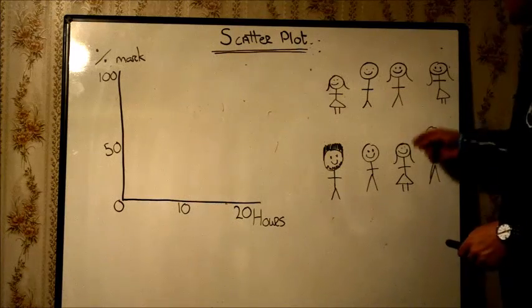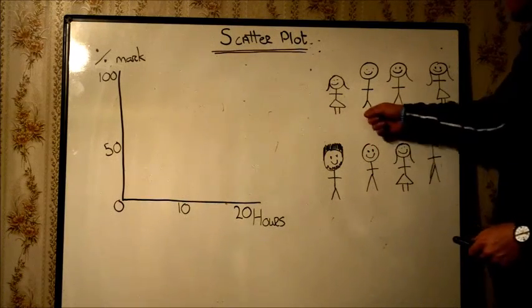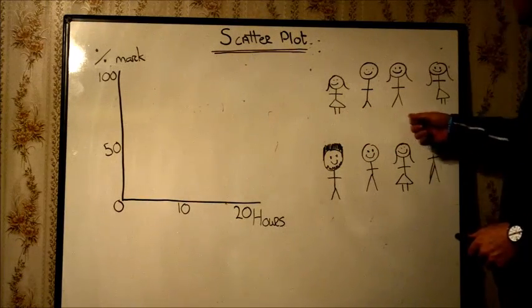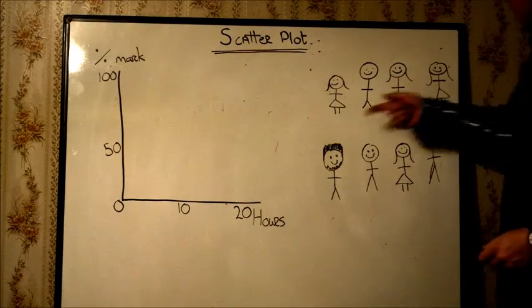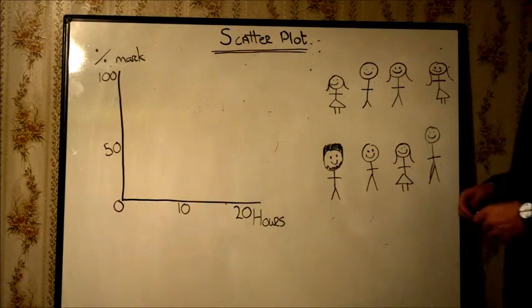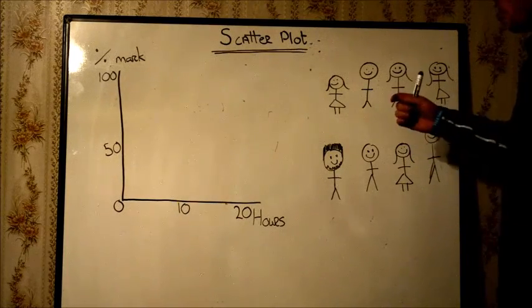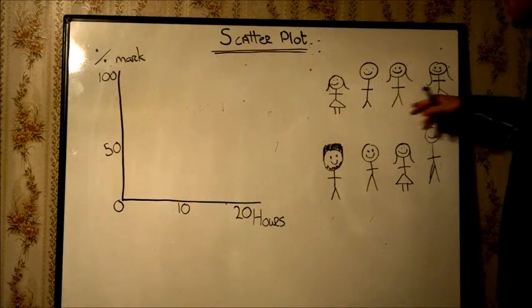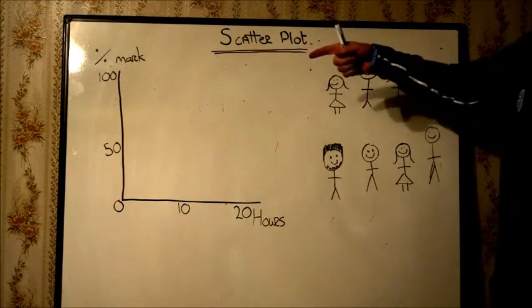We're going to look at the relationship between hours studied and grades in an exam received. There's the eight students: Larissa, Mitchell, Annie, Louise, JJ, Willie, Kaya, and Jamie. We're going to look at how much each of you study and then the mark you got.